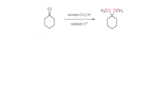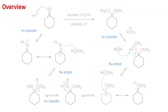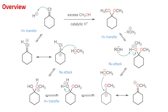When an aldehyde or a ketone is treated with an excess of an alcohol and a catalytic amount of a strong acid, an acetal is formed. The mechanism is acid-catalyzed, in which the proton activates the carbonyl, causing enhanced reactivity with alcohol. Trapping of one molecule of alcohol gives a hemiacetal, which reacts further to produce the acetal.